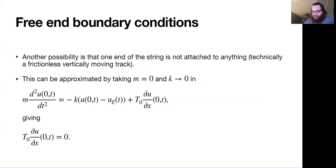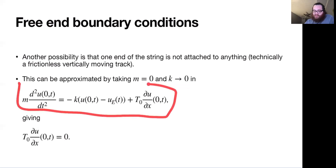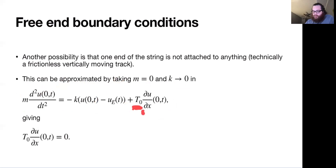With zero mass and no other forces, what we can do is say this spring constant K — telling us how resistive or what the restoring force of the spring is — if the spring doesn't actually have any restoring force, that corresponds to K going to zero. So if we look at this equation again: if mass is zero, so the string is just tied to the spring, that whole term is zero. If K is zero, then this whole thing is zero. And so then we're left with T zero times d/dx of the value at zero comma t, all equal to zero.